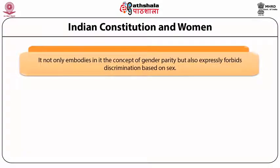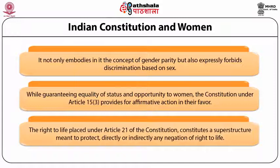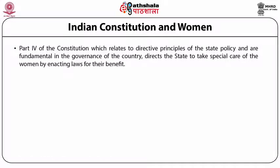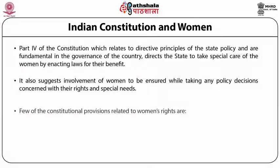The constitution not only embodies the concept of gender parity but also expressly forbids discrimination based on sex. While guaranteeing equality of status and opportunity to women, the constitution under Article 15 Clause 3 provides for affirmative action in their favour. The right to life placed under Article 21 of the constitution constitutes a super structure meant to protect directly or indirectly any negation of right to life. Part 4 of the constitution, which relates to directive principles of state policy and are fundamental in the governance of the country, directs the state to take special care of women by enacting laws for their benefit. It also suggests involvement of women to be ensured while taking any policy decision concerned with their rights and special needs, and this article permits the government to make positive discriminatory law in favour of women.